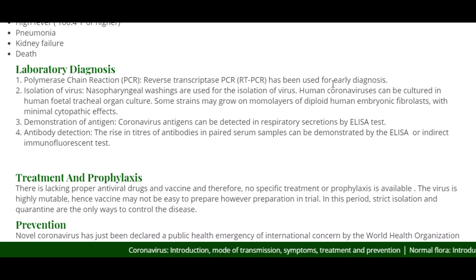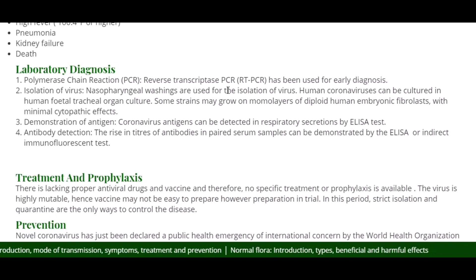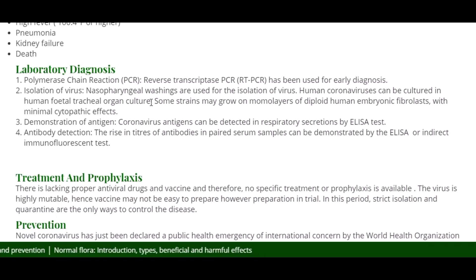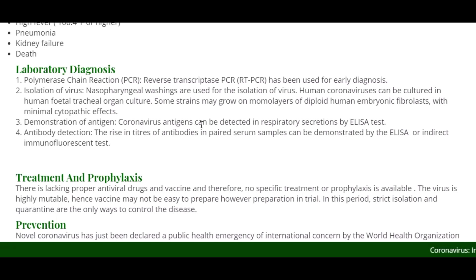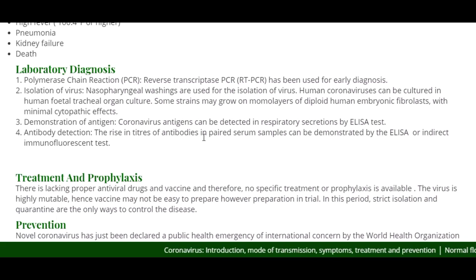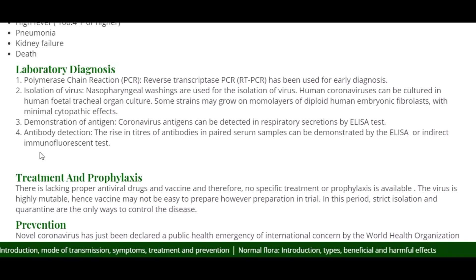For lab diagnosis: isolation of the virus uses nasopharyngeal washings. Human coronavirus can be cultured in human fetal tracheal organ culture; some strains may grow on monolayers of diploid human embryonic fibroblasts with minimal cytopathic effects. Coronavirus antigen can be detected in respiratory secretions by ELISA test. For antibody detection, the rise in titers of antibodies in paired serum samples can be demonstrated by ELISA or indirect immunofluorescent test.